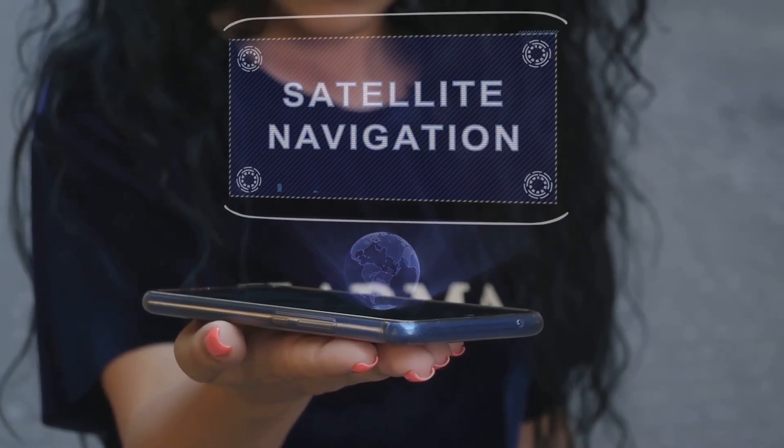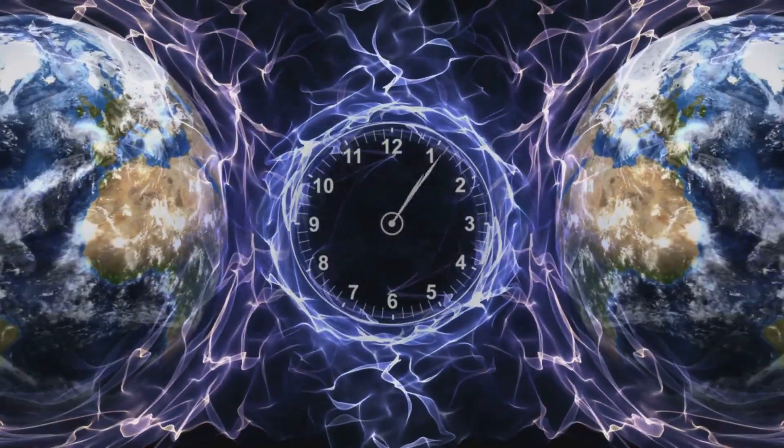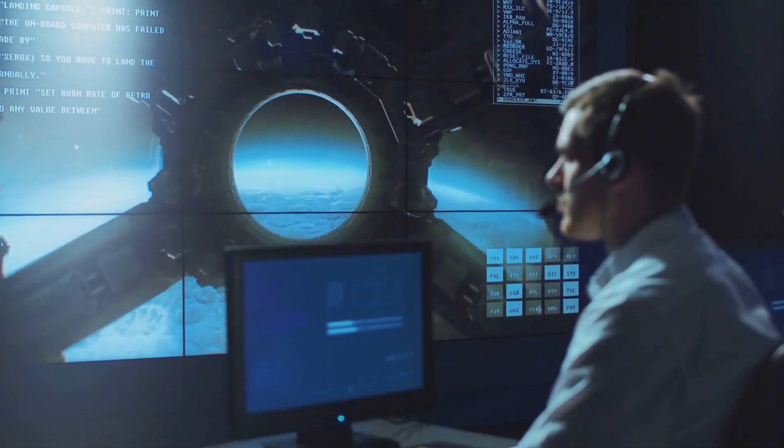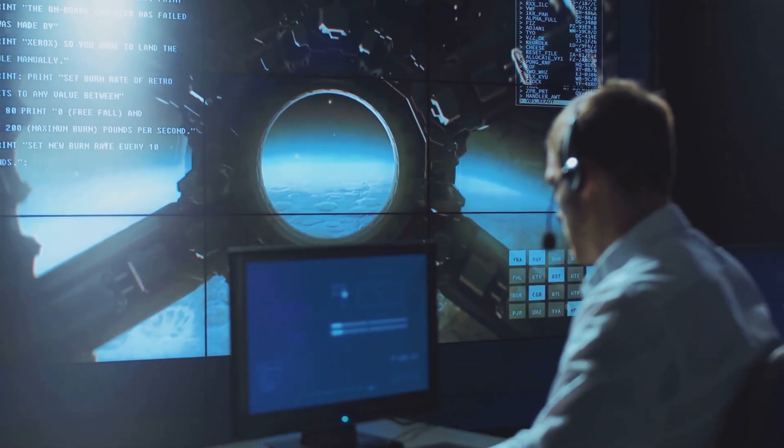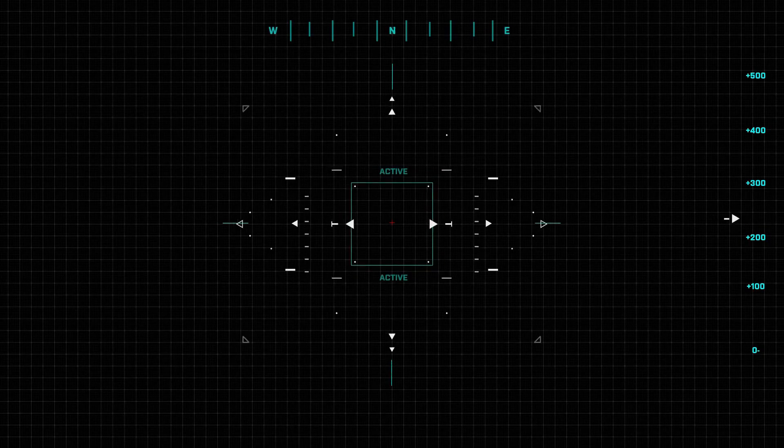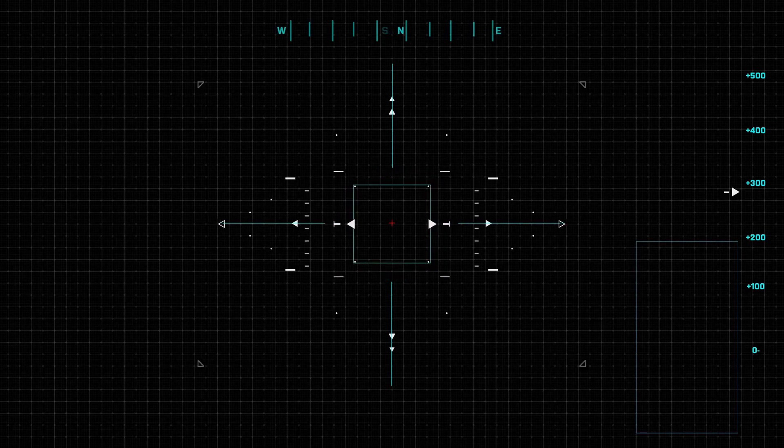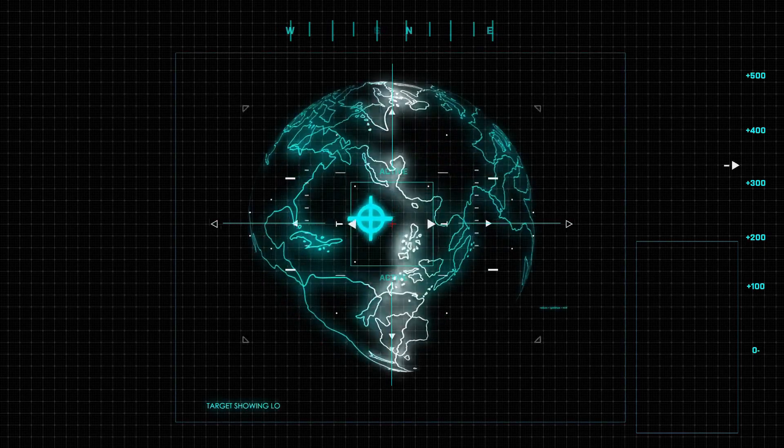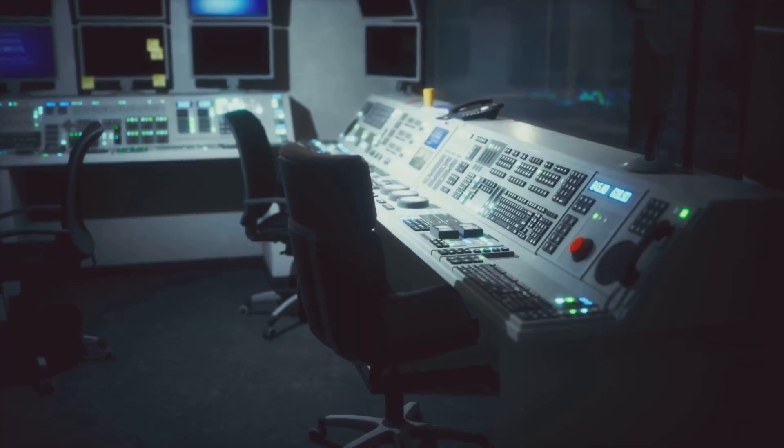GPS satellites. Every time you use Google Maps, you're depending on relativity. GPS satellites orbit Earth at high speeds, and their clocks tick differently from ours on the ground. Without corrections from Einstein's relativity, GPS would drift kilometers off within a single day.